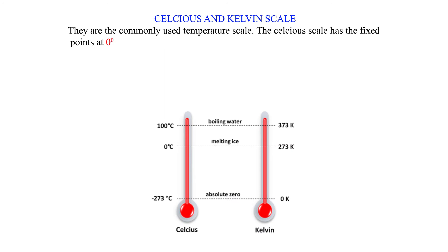Celsius and Kelvin scale. They are the commonly used temperature scales. The Celsius scale has the fixed points at 0°C and 100°C.